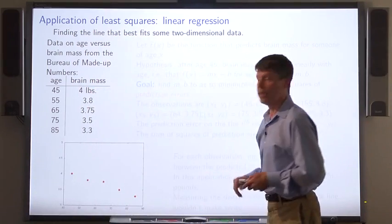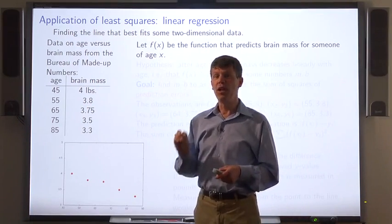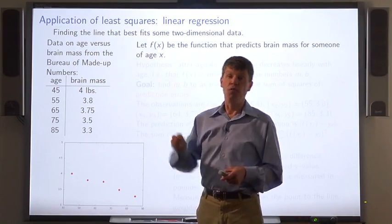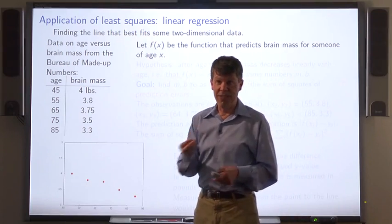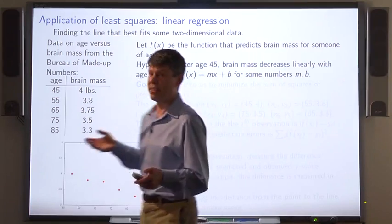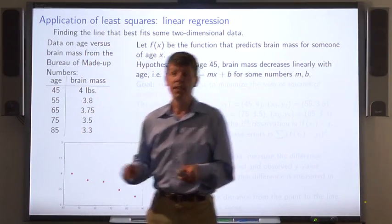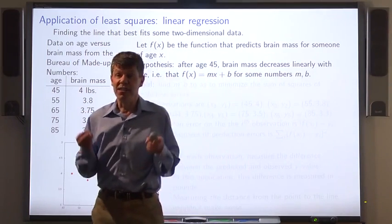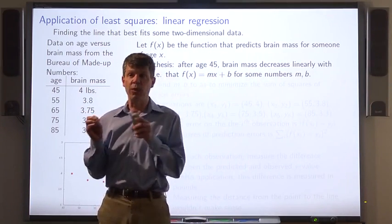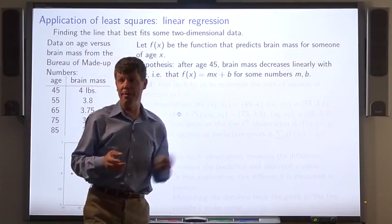Here's the data plotted. Now, let f of x be the function that predicts average brain mass for a given number of years x. We might have the hypothesis that brain mass decreases linearly, at least after age 45. That is that f of x has the form f of x equals m times x plus b, for some numbers m and b.